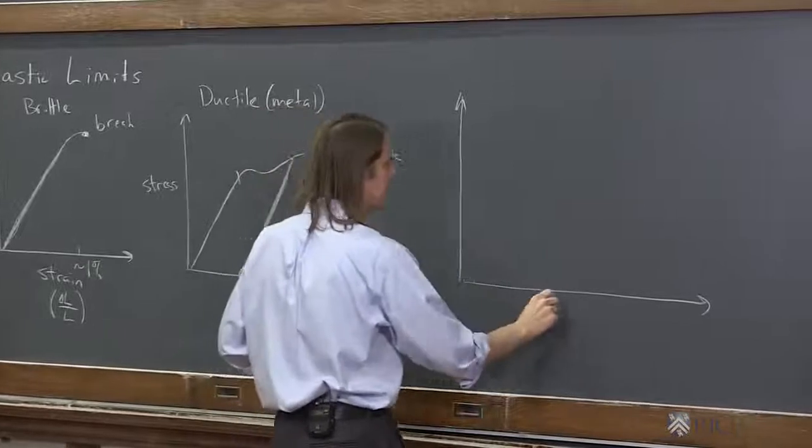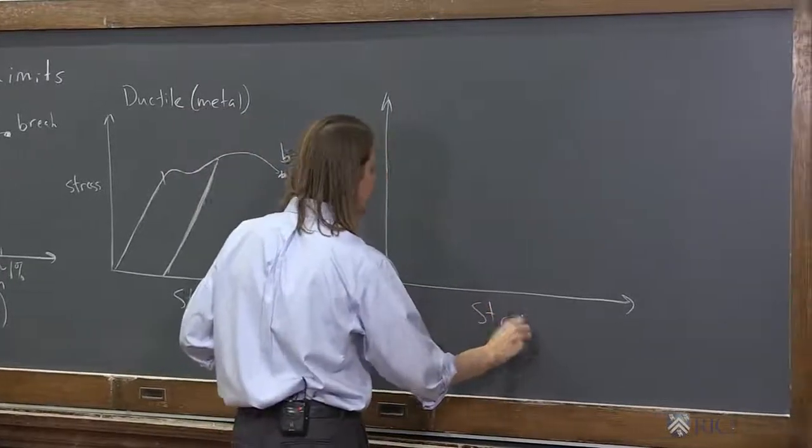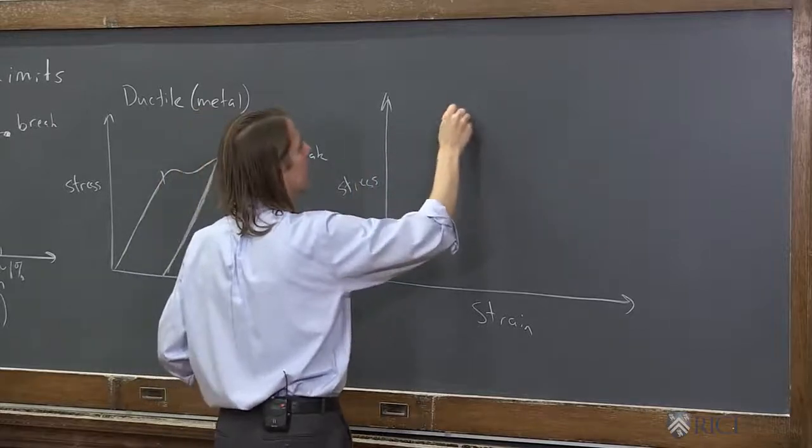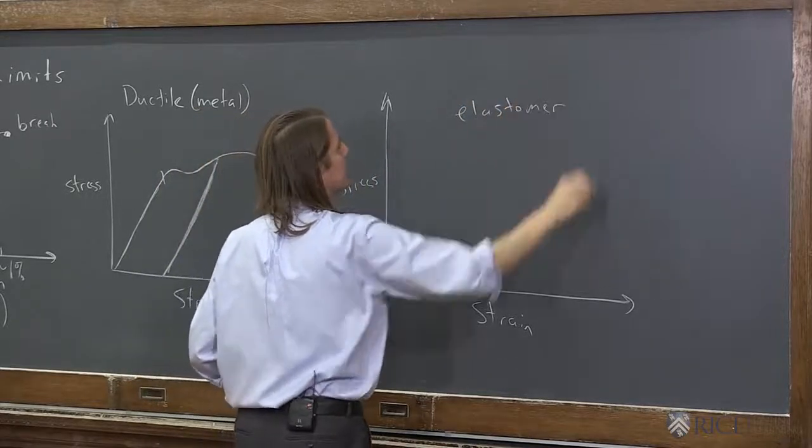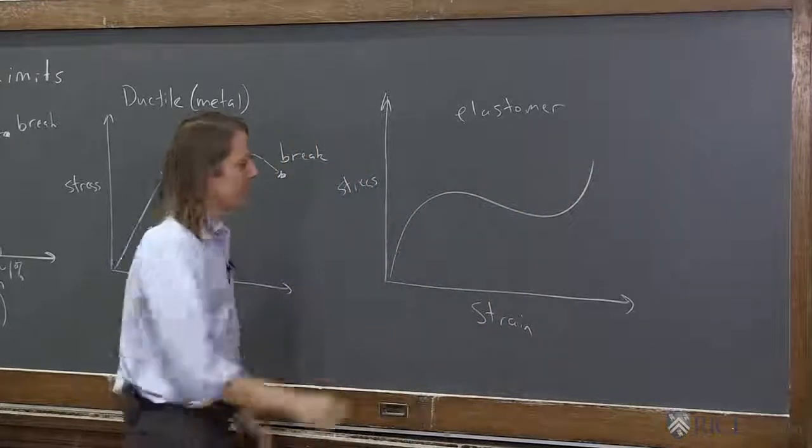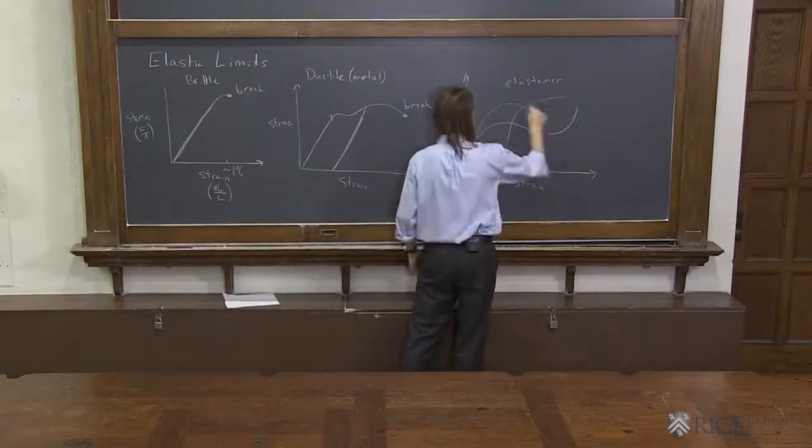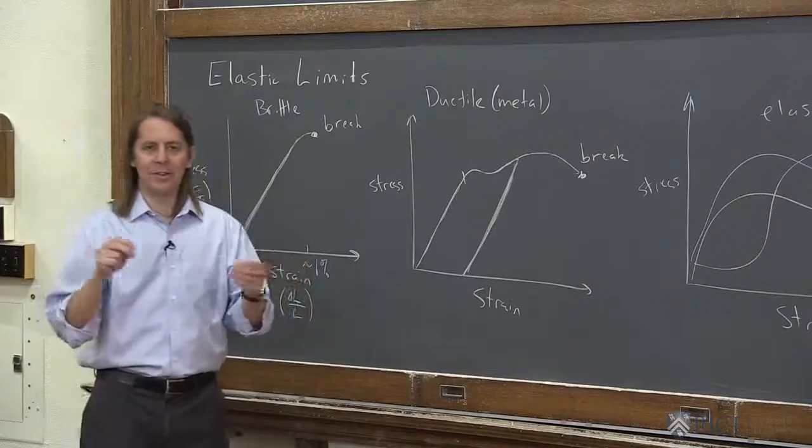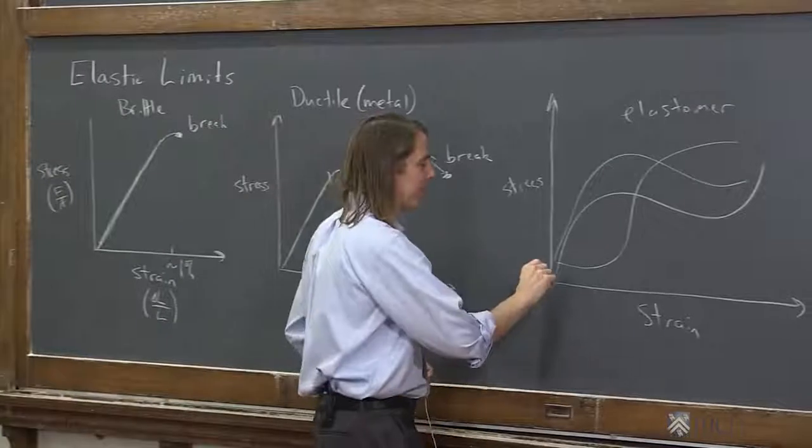If you look at the stress-strain curve of, I don't know what to call it, an elastomer I guess, all these polymer stretchy things, it kind of goes something like that, or all kinds of weird shapes. It doesn't make a line, is the point. It doesn't make a line, yet we call it elastic. And the reason is it does follow the same curve back.